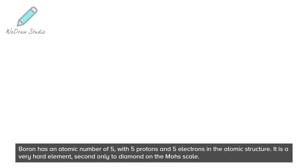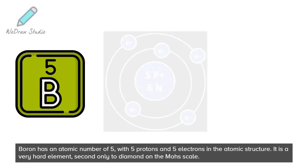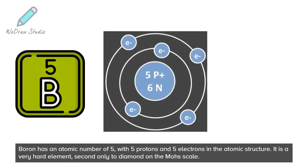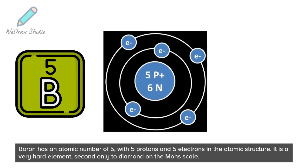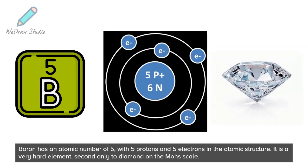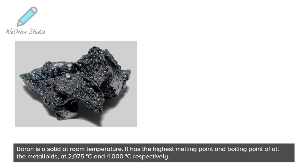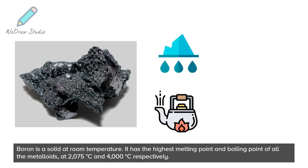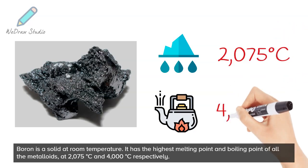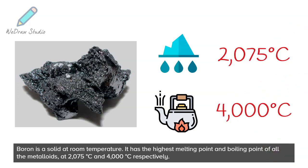Boron has an atomic number of five, with five protons and five electrons in its atomic structure. It is a very hard element, second only to diamond on the Mohs scale. Boron is a solid at room temperature, with the highest melting point and boiling point of all the metalloids: 2075 degrees Celsius and 4000 degrees Celsius respectively.